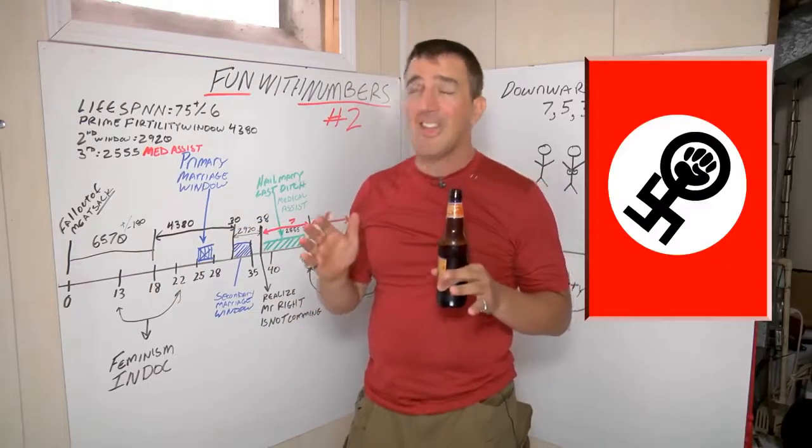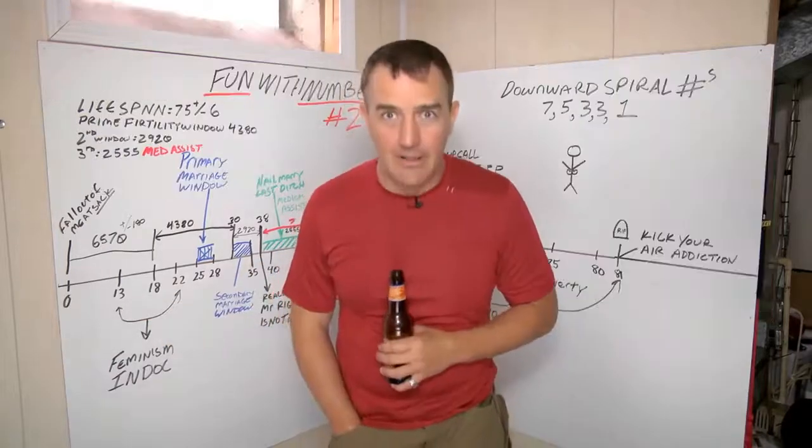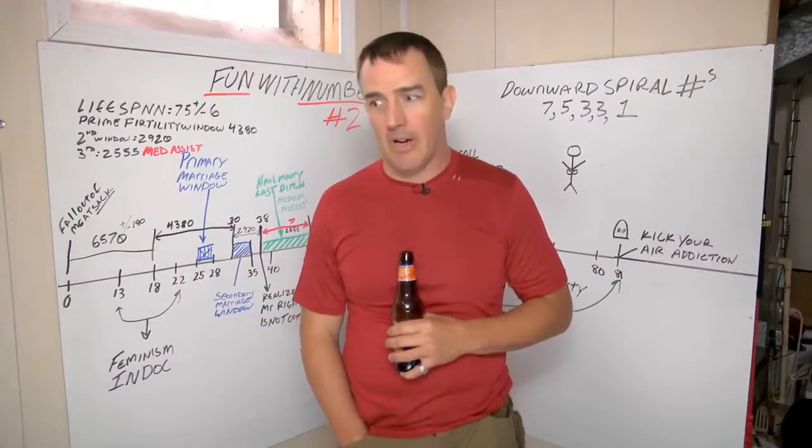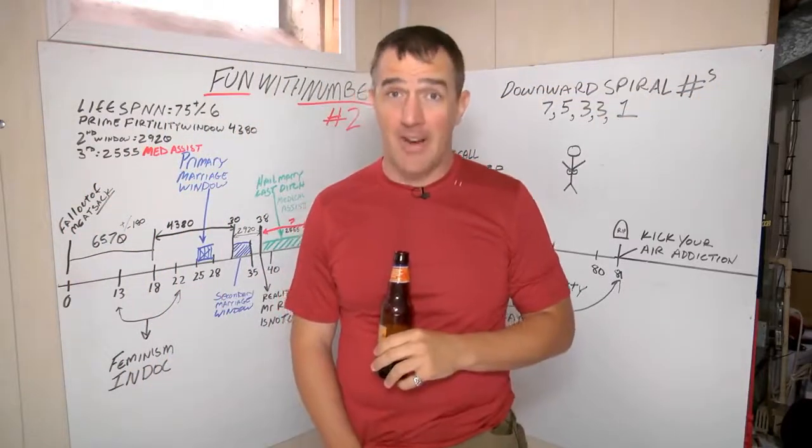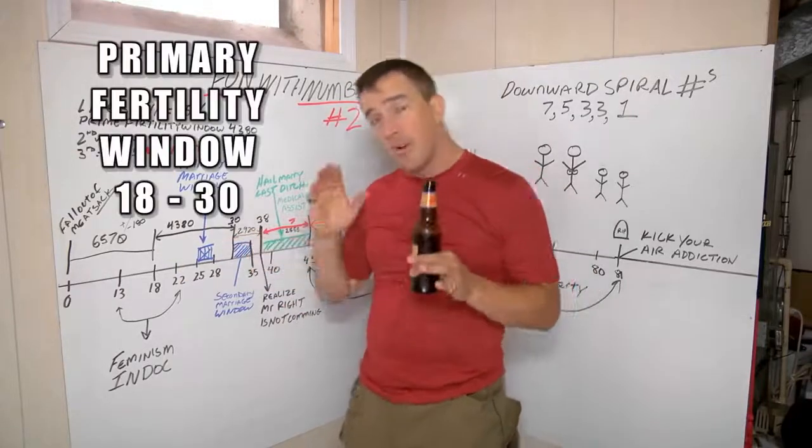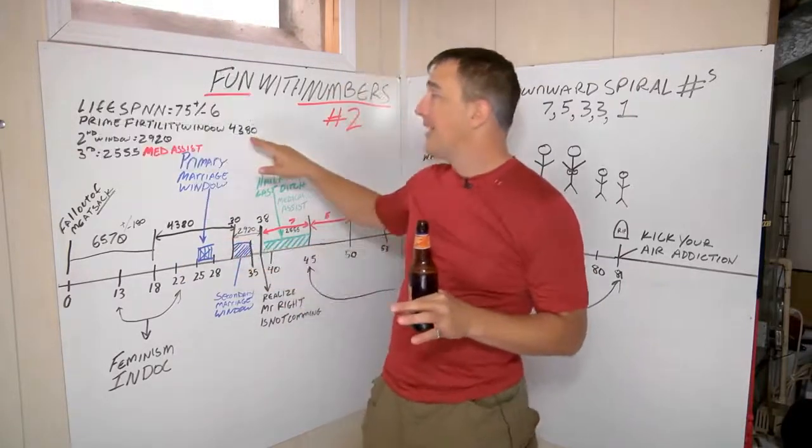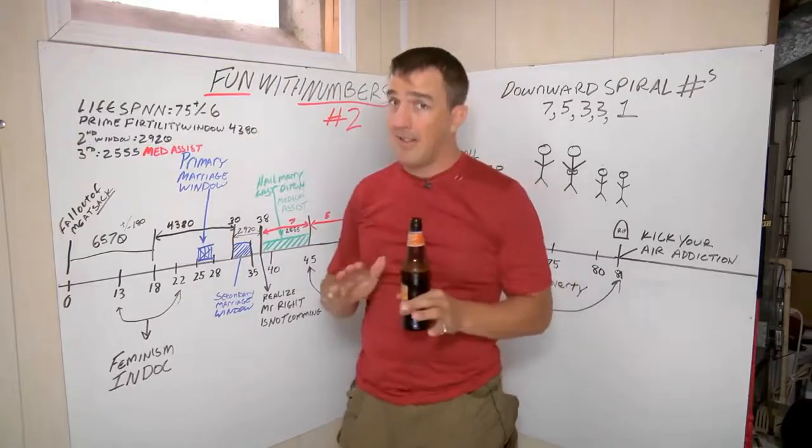Feminism, the women are usually indoctrinated between 13 and 22. Indoctrination. What does that remind you of? Get the hint? They don't call it a Feminazi for nothing. From 18 to 30, their primary fertility window is 4,380 days. That's not a lot of days.